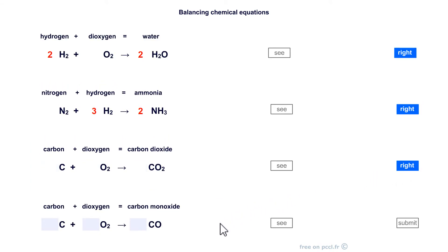And the last. C plus O2 yields CO. One carbon. One carbon there too. Oxygen. Two on the left and one on the right. I cannot put the two after. The carbon monoxide molecule is what it is.